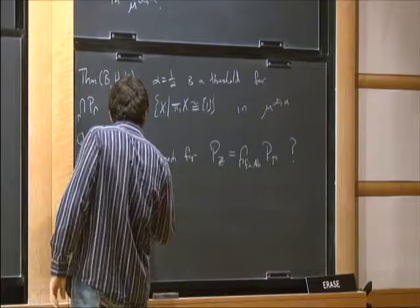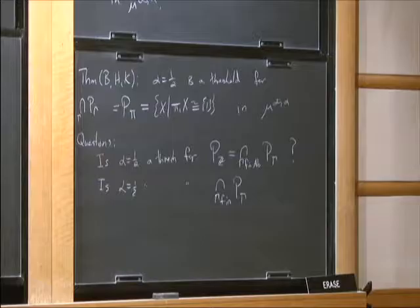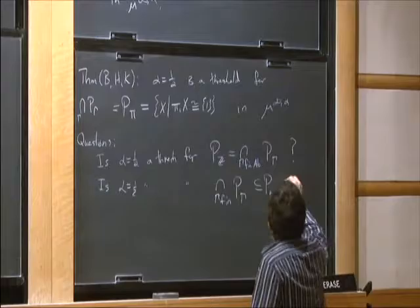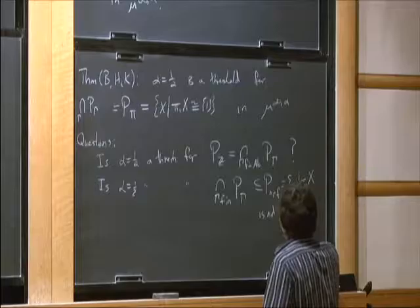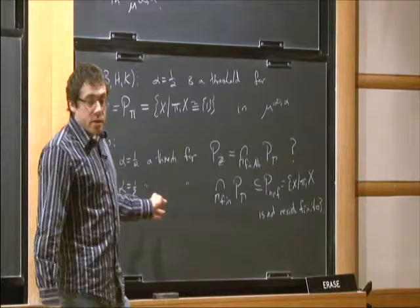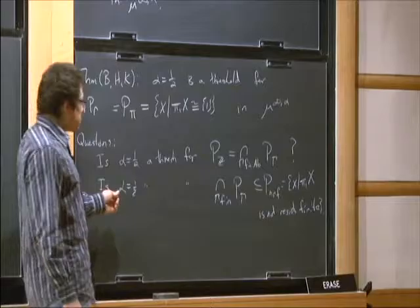Similarly we could ask it for the intersection of all finite groups: the threshold for the intersection over all γ finite of P_γ. In particular, if there are no nontrivial maps to finite groups, then it's not residually finite. So this is contained in P_{nrf} — the set of things such that π₁(X) is not residually finite. If this number were larger than 1/2, then we'd have a whole regime where we'd have things that were not residually finite.